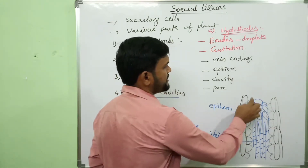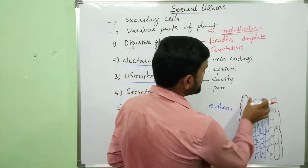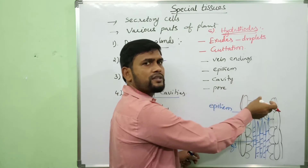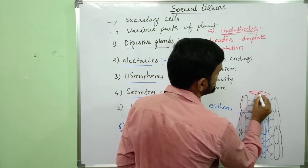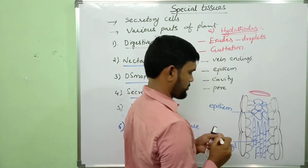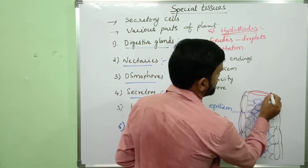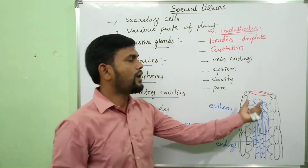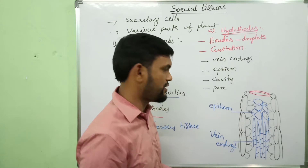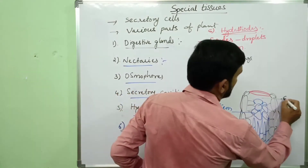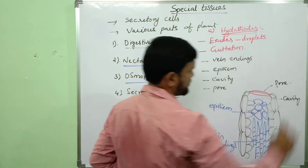The epithem is associated with a cavity. This cavity opens out through a pore. Through this pore, water exudes in the form of droplets. This is the cavity and this is the pore.